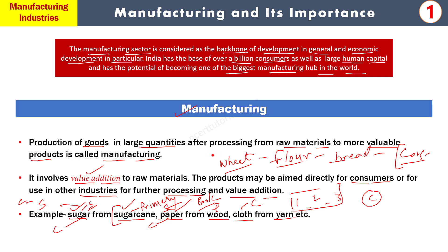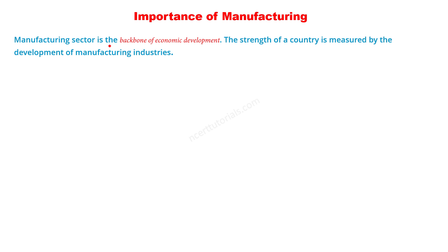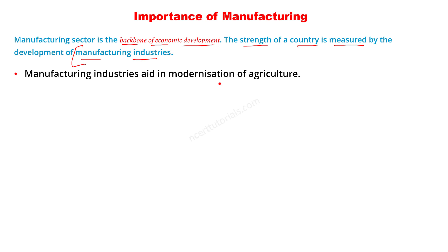Manufacturing की importance क्या है किसी economy में? Manufacturing sector is the backbone of economic development. किसी भी country की economy कितनी ताकतवर है उसे इसी से assess करते हैं - यह measured होता है कि वहाँ manufacturing industries का क्या status है, how strong the manufacturing sector is. Manufacturing industries aid in modernization of agriculture - agriculture को modernize करने में manufacturing sector काम करता है।